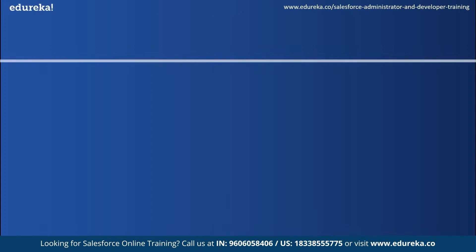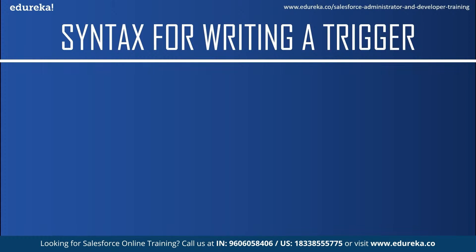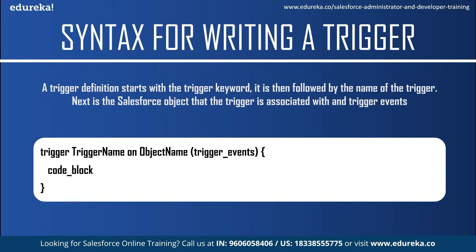The syntax of a trigger definition is quite different from a class definition syntax. A trigger definition starts with the trigger keyword, followed by the name of the trigger — you can name it anything you want. Next is the Salesforce object the trigger is associated with, known as an S-object, which could be leads, contacts, accounts, or any custom objects. Next is the trigger event, and you can fire a trigger on one or more events using comma separation. Finally, there is the body of the code containing the condition under which it fires.